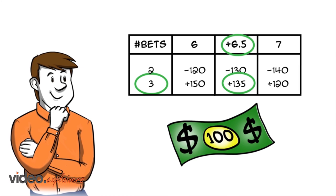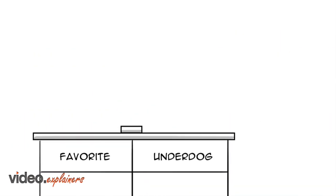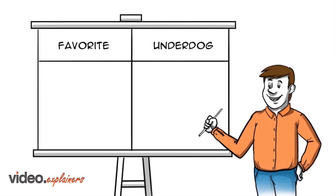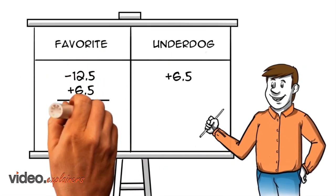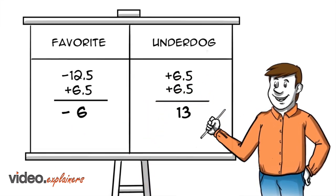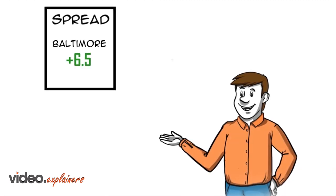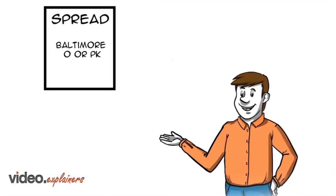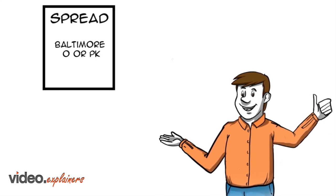Purchased points shift spreads in your favor. Favorites can win by fewer points, underdogs can lose by more points. Now Baltimore's line is zero or PK - they only need to win outright.